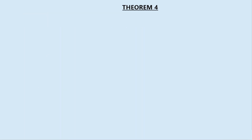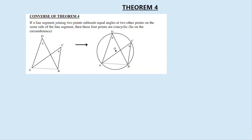The converse of theorem number 4: if a line segment joining two points subtends equal angles to two other points on the same side of the line segment, then these four points are concyclic — they lie on the circumference of the same circle. So if the angles are equal, the four points are concyclic. This converse is just to show that theorem 4 does have a converse, but it's not examinable.